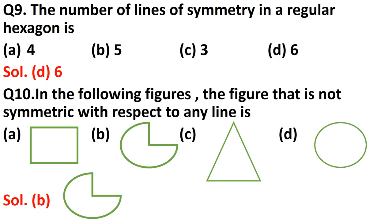Question number ten: in the following figures, which figure is not symmetric with respect to any line? You have to identify the figure with no line of symmetry. Option A is a square — it has four lines of symmetry. Option C is a triangle — if isosceles, it has one line of symmetry. Option D is a circle which has infinite lines of symmetry. The correct answer is option B, which does not have any line of symmetry.